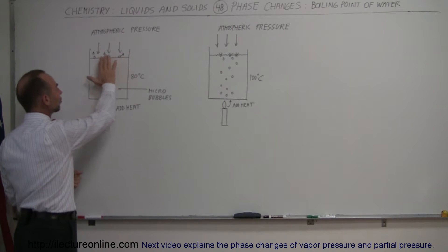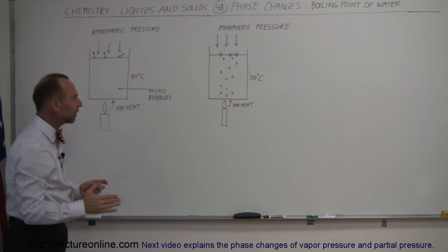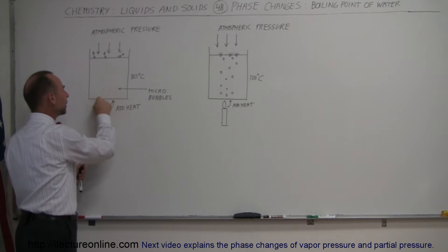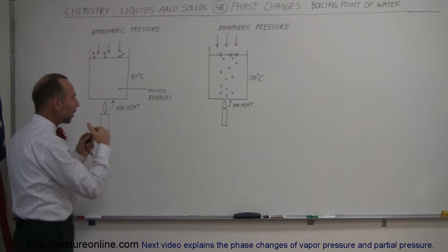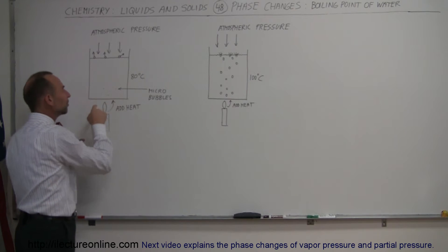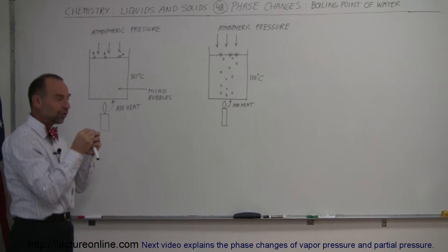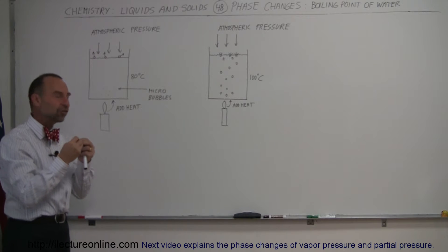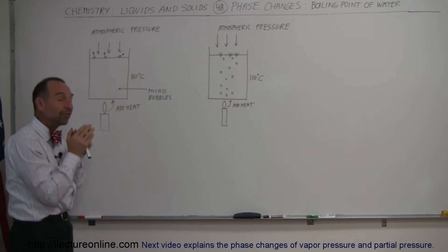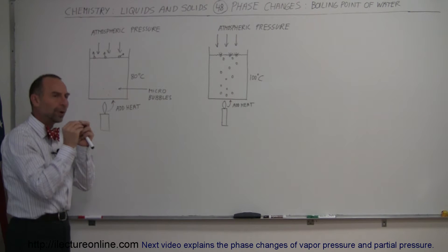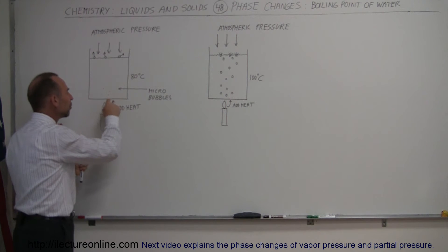Let's say the general temperature of the water is 80 degrees centigrade, but close to the flame, the water will be hotter. As the water gets warmer, some molecules will reach such a high temperature and so much kinetic energy that they'll actually begin to vaporize right inside the liquid, creating what we call micro bubbles.